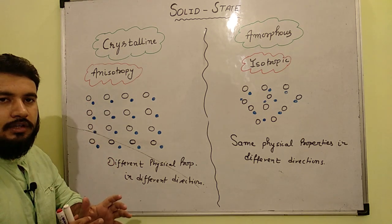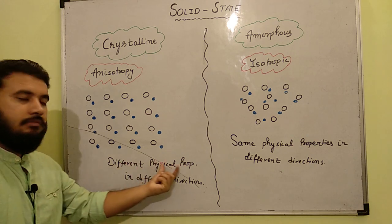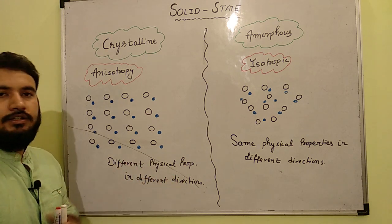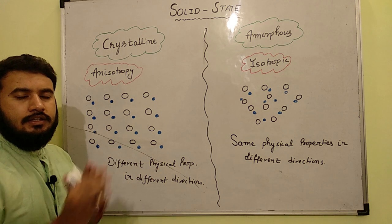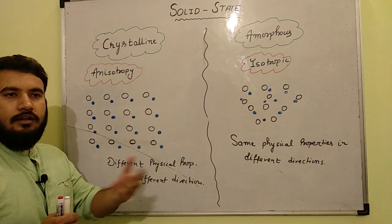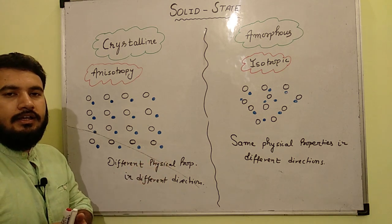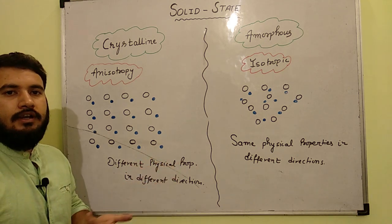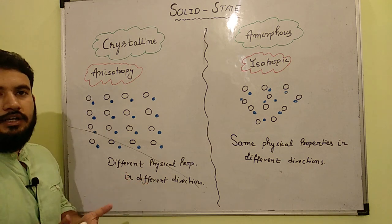So if we talk about anisotropy, anisotropy meaning is different physical properties in different directions. Meaning if we want to study some physical properties in different directions, like physical properties like refractive index, dielectric constant and speed of light. So suppose if we want to study them.